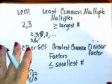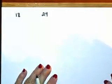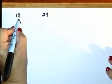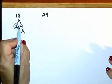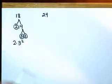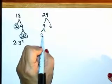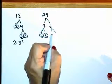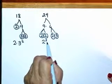This is easy using the listing factors method, but let's say we get to numbers like 18 and 24. We're going to use a factor tree and prime factorization. For 18: it factors into 2 times 9, and 9 factors into 3 times 3, so the prime factors for 18 are 2 times 3 squared. For 24: we have 4 times 6, then 4 is 2 times 2 and 6 is 2 times 3, so the prime factors for 24 are 2 to the third power times 3.